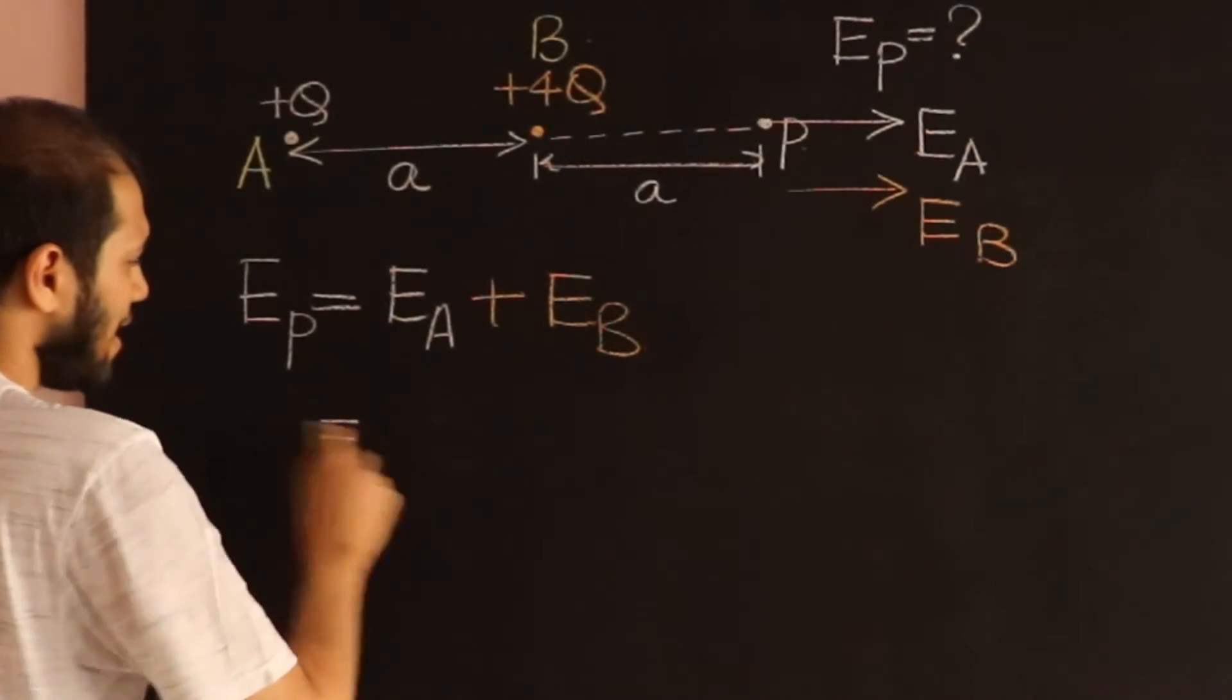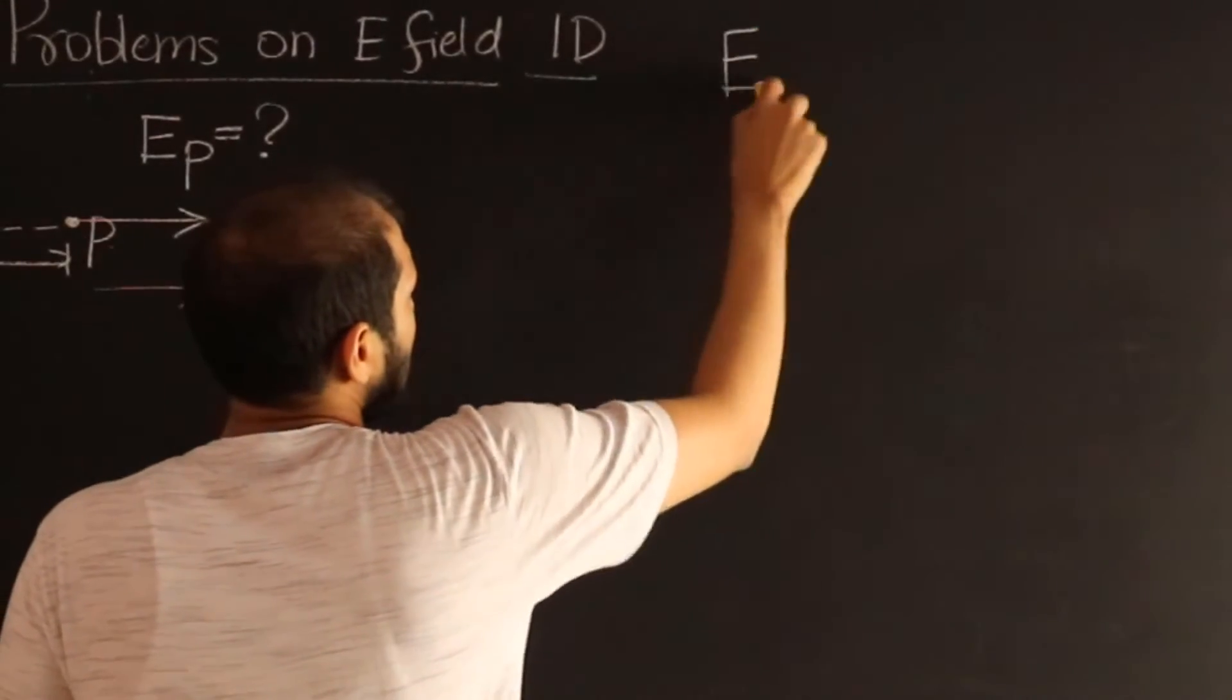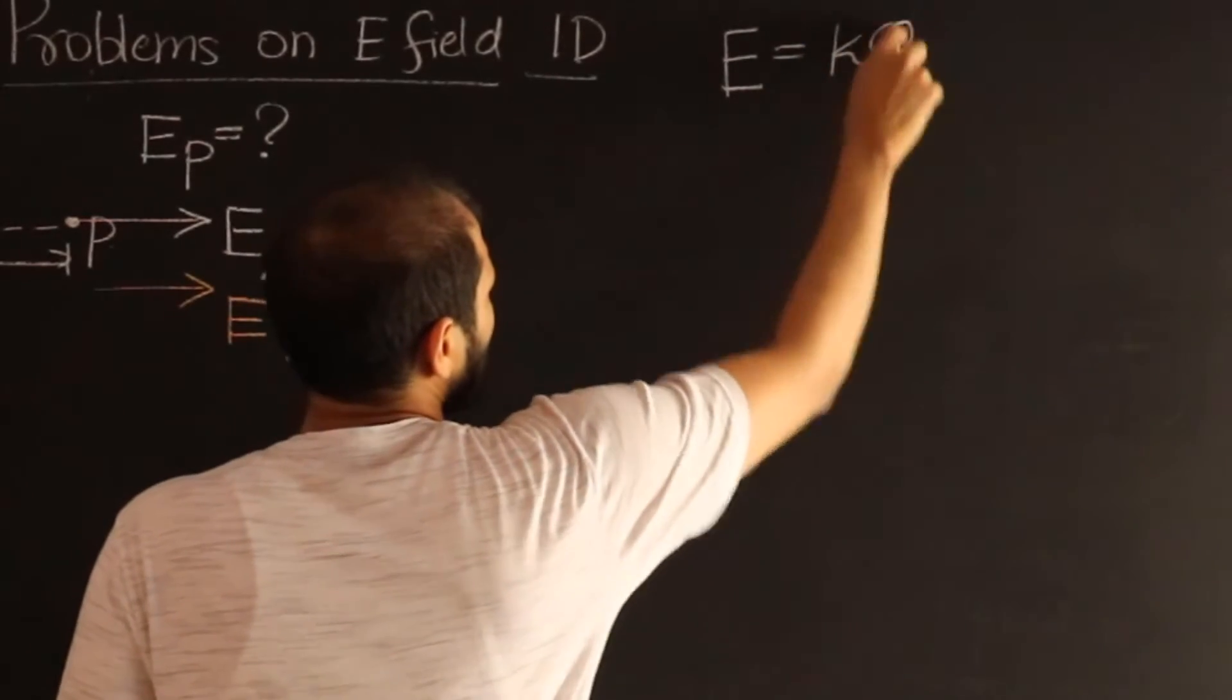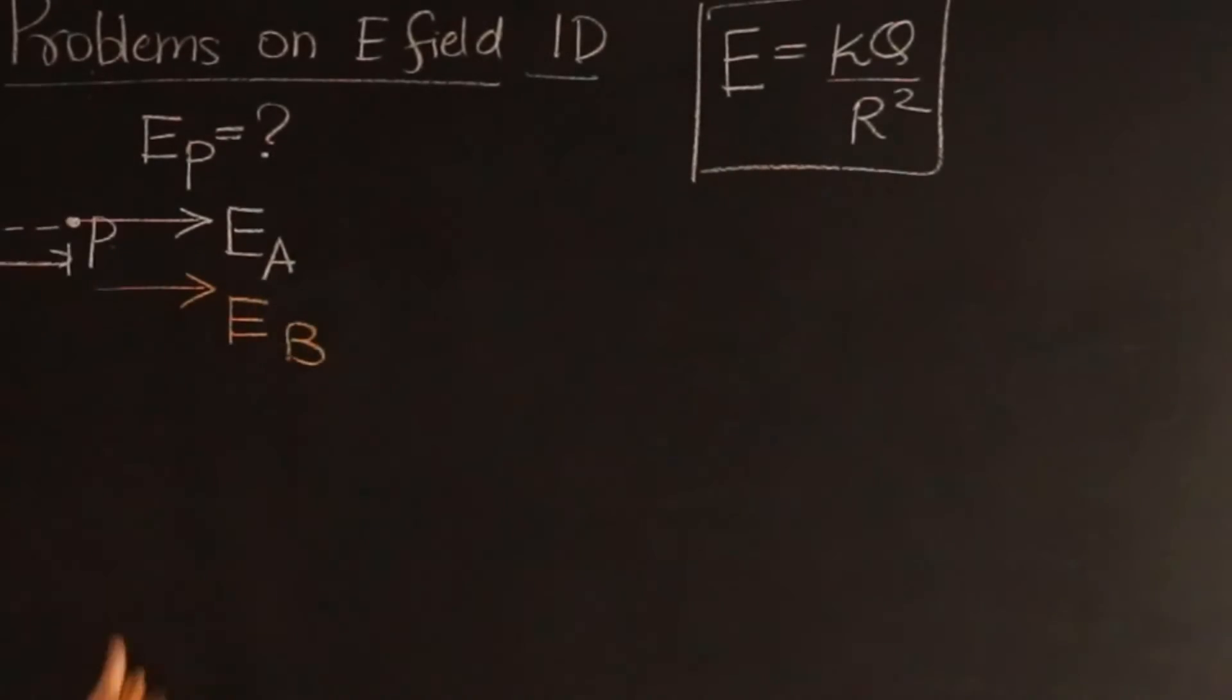Electric field E_A, well we know what the formula for electric field is, but I'll write that down over here. That is KQ by R squared. That's the field due to a point charge which we'll use here.